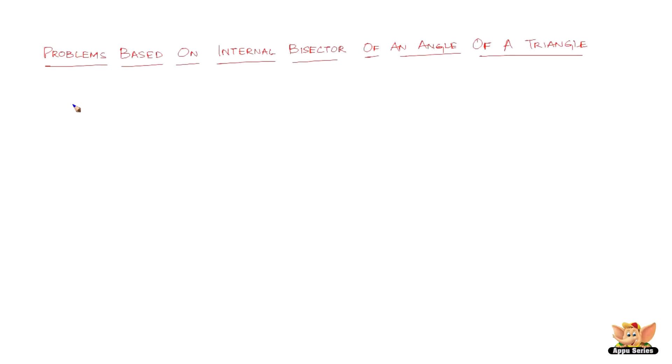In this video let us solve problems based on internal bisector of an angle of a triangle. So here we've got a question which reads like this. In the figure given here AD is the bisector of angle A.